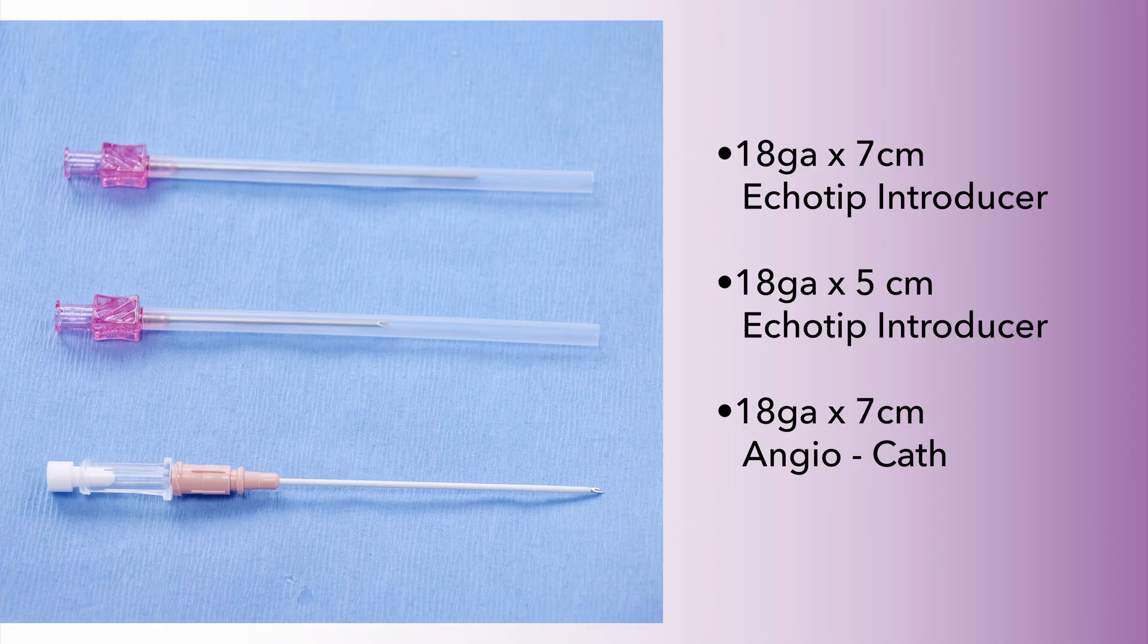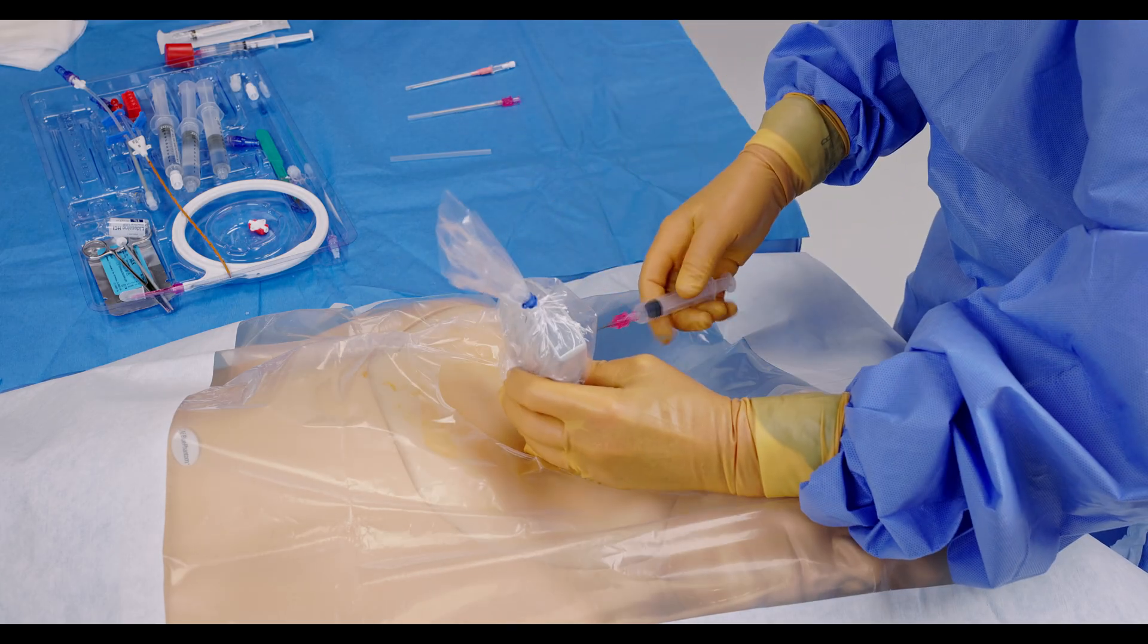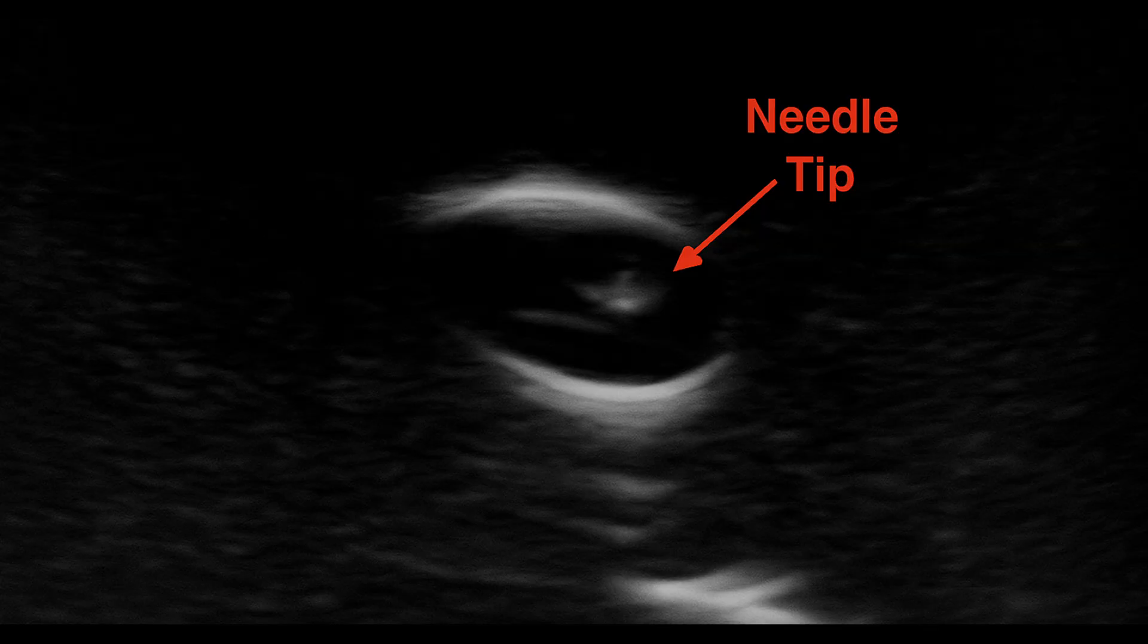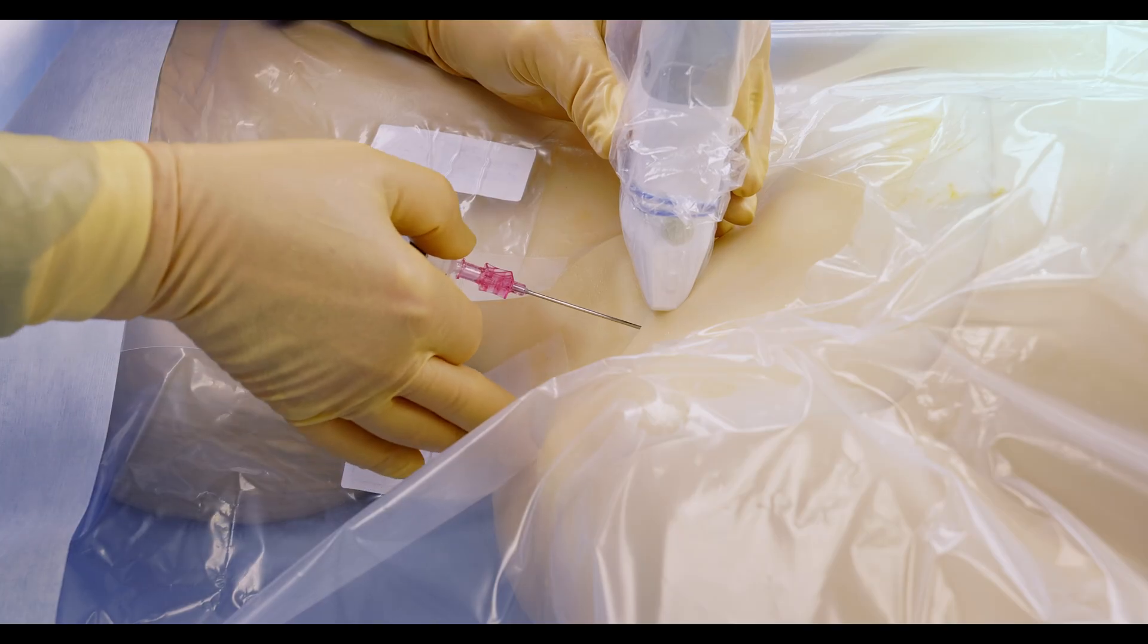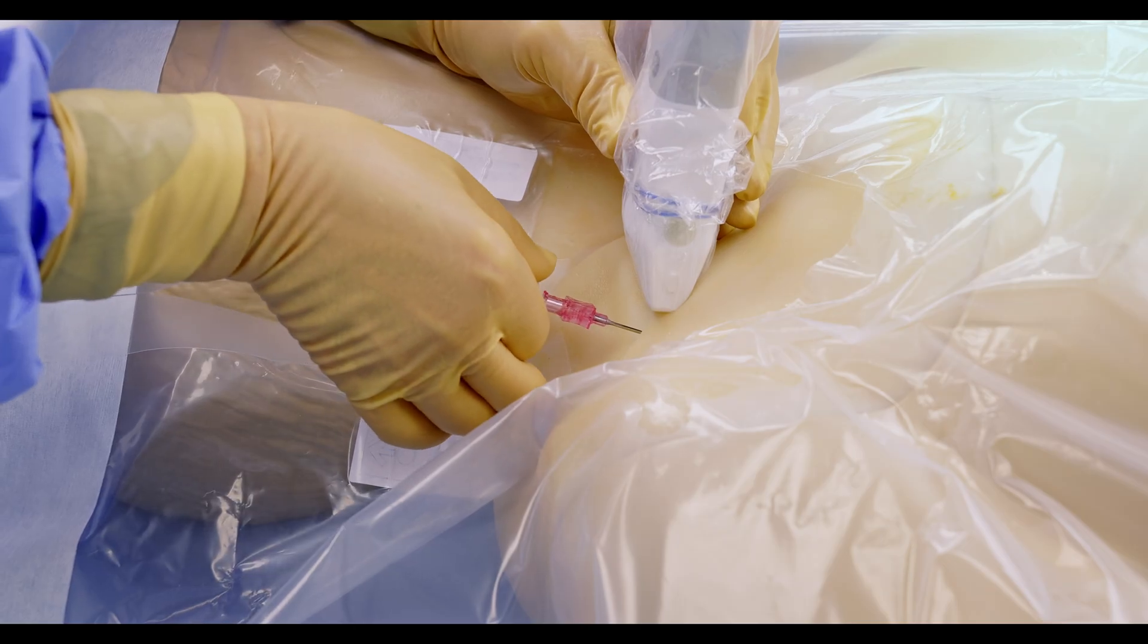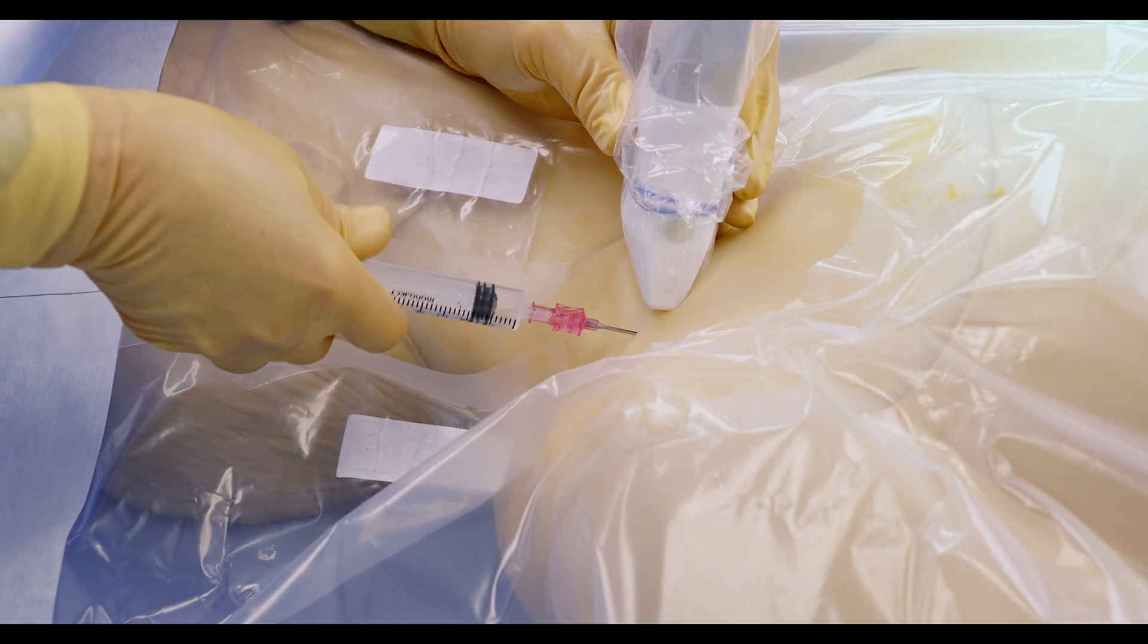The kit includes three introducer options to suit different vein sizes and user preferences: two echo tip needles (18 gauge, 7 cm and 5 cm), and one 18 gauge, 7 cm catheter over needle (an angiocath). Using ultrasound guidance, introduce the thin-wall percutaneous entry needle into the selected vessel. Aspirate gently to confirm venous blood return. This confirms proper needle tip positioning inside the vessel.